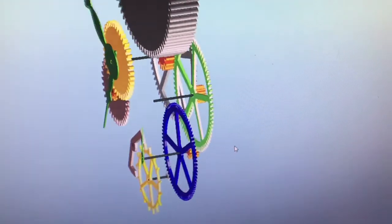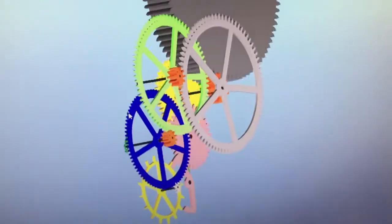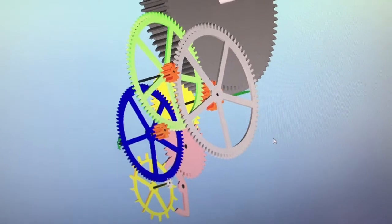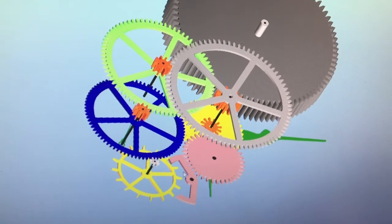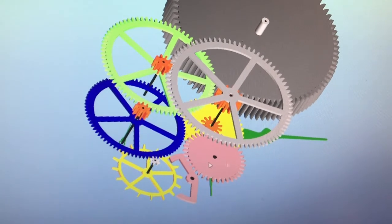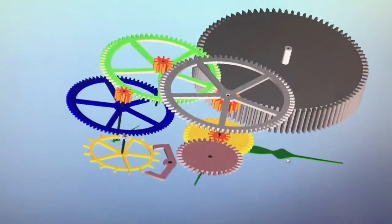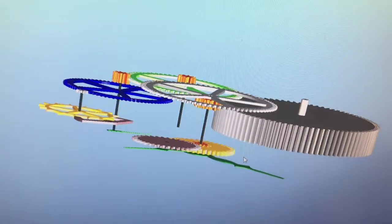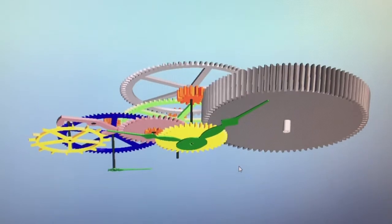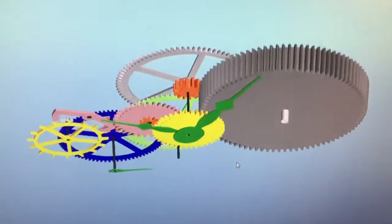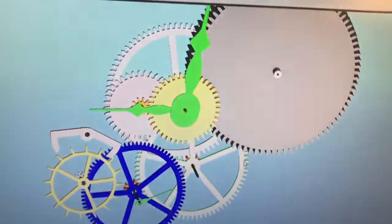Then that goes to the escapement, which is modeled here with a pallet fork on the end. It's a pin lever escapement, I believe, and when I did this I tried to maintain all the correct distancing for the hour hand and minute hand.